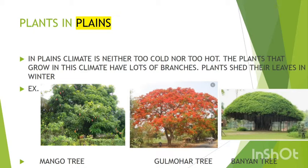Plants in plains grow in a moderate climate. The plants that grow in this climate are plentiful. Plants shed their leaves in winter. Examples include the mango tree, bilboha tree, and banyan tree.